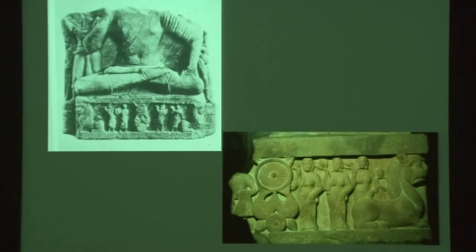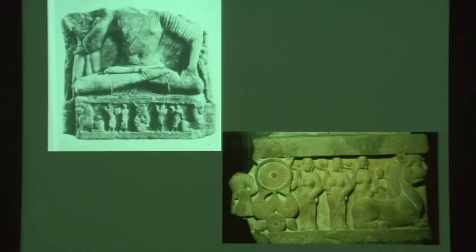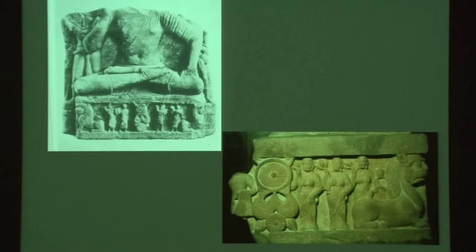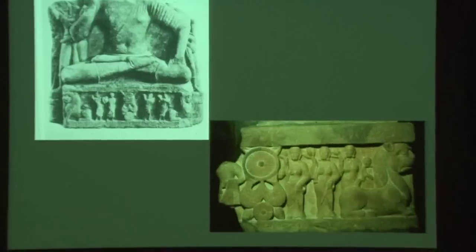Many people have asked how you really distinguish an image of a Jina from that of the Buddha. They're meditating, scantily clad, and have auspicious marks — in some cases a skull protuberance or extended earlobes — and they can look very similar. What is very clear from the very beginnings of image making in north India, particularly centered around Mathura — the great production center of the Kushans in northern India, described by early Greek geographers as 'the city of the gods' — is that many faiths cohabited within that one city under a very tolerant regime.